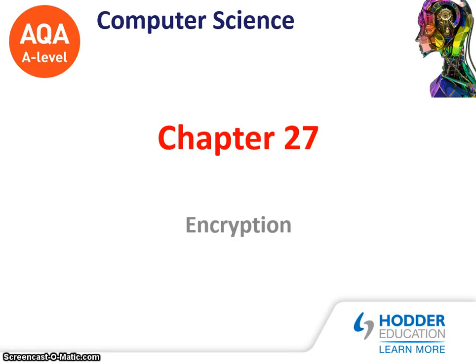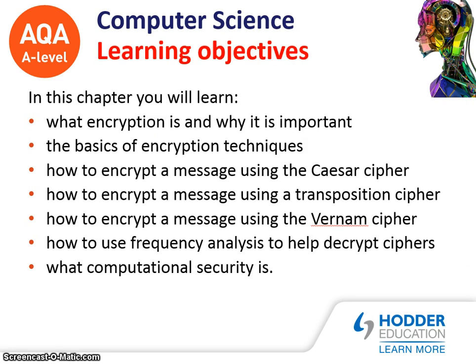In this chapter we're going to look at encryption. This is part of the A-level in computer science. The aims are to look at what encryption is and why it is important. We're going to look at the basics of encryption techniques — the Caesar cipher, the Transposition cipher, the Vernam cipher — and how to use frequency analysis to help decrypt ciphers. We'll also look at what computational security is.